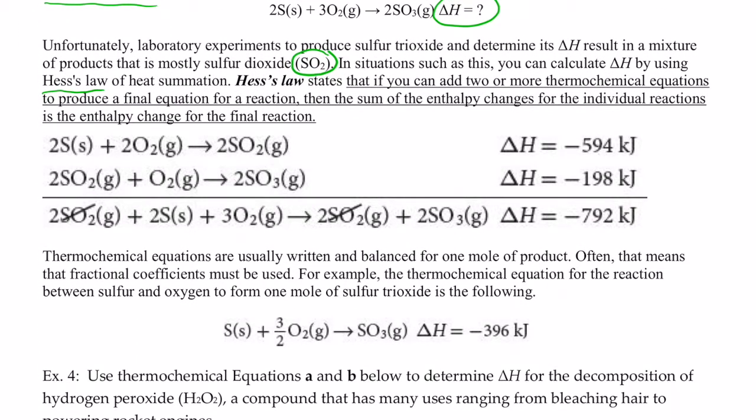So if I know the heat of formation of sulfur dioxide from its elements, remember we're after sulfur trioxide. So that would be S and O2 to form SO2. Now you'll notice that this is balanced for two moles here. Don't worry about that for right now. Normally we use one mole, but we're going to balance it for two moles here. The delta H for the formation of sulfur dioxide from its elements is negative 594 kilojoules.